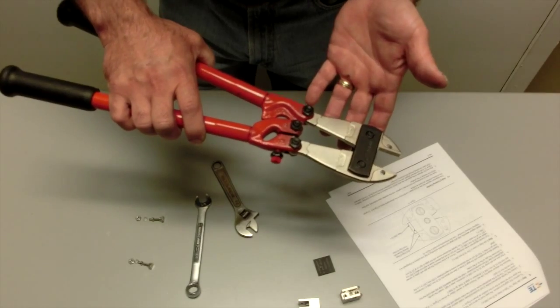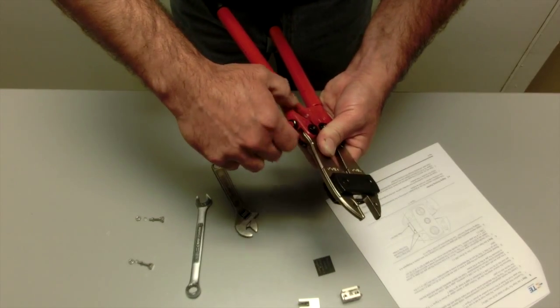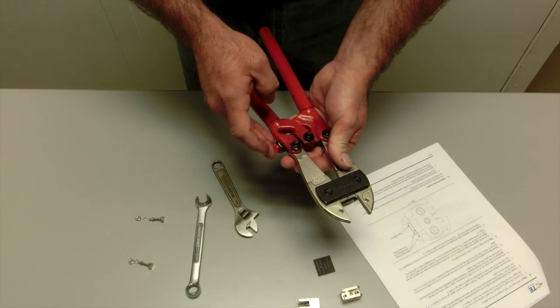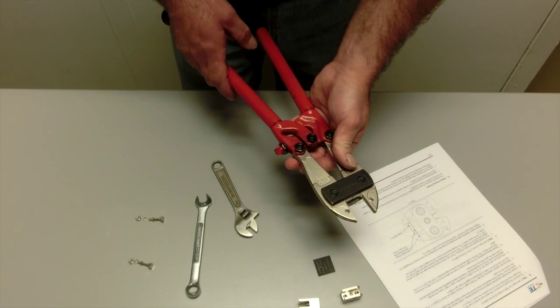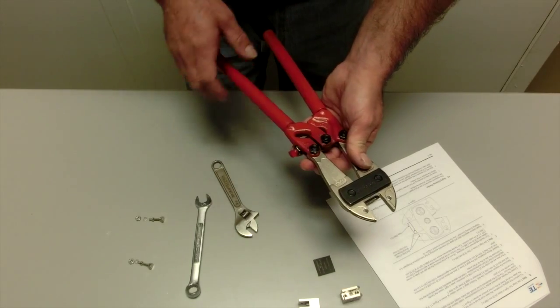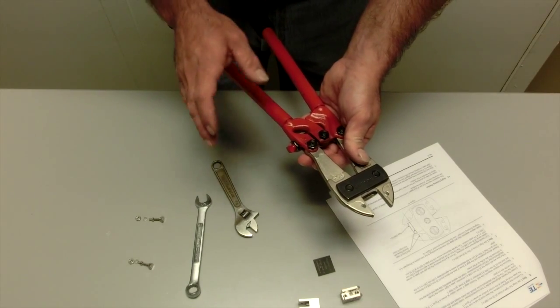So the next step would be to lock this jam nut. Now be advised some of these tools will require multiple adjustments on this screw. Take small adjustments because as you get closer to this gauge height that distance changes very quickly.